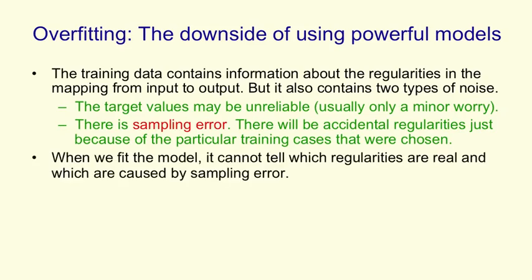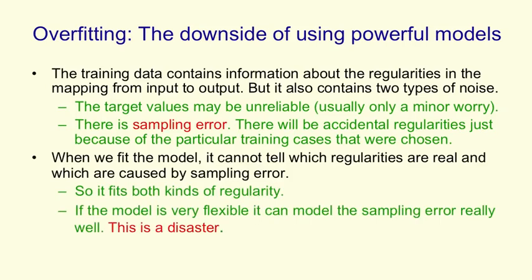Now when we fit a model, there's no way it can tell the difference between an accidental regularity that's just there because of the particular samples we chose and a real regularity that will generalize properly to new cases. So what the model will do is it'll fit both kinds of regularity. And if you've got a big powerful model, it'll be very good at fitting the sampling error, and that'll be a real disaster. That'll cause it to generalize really badly.